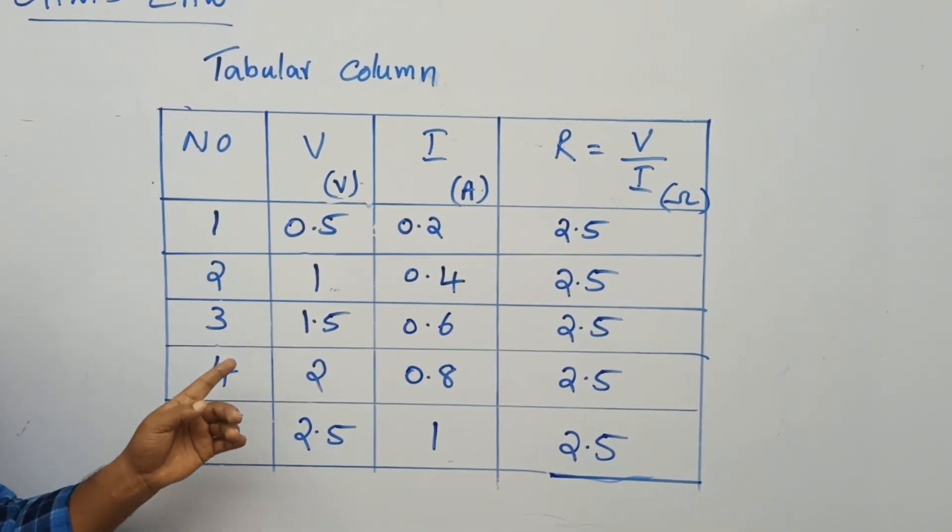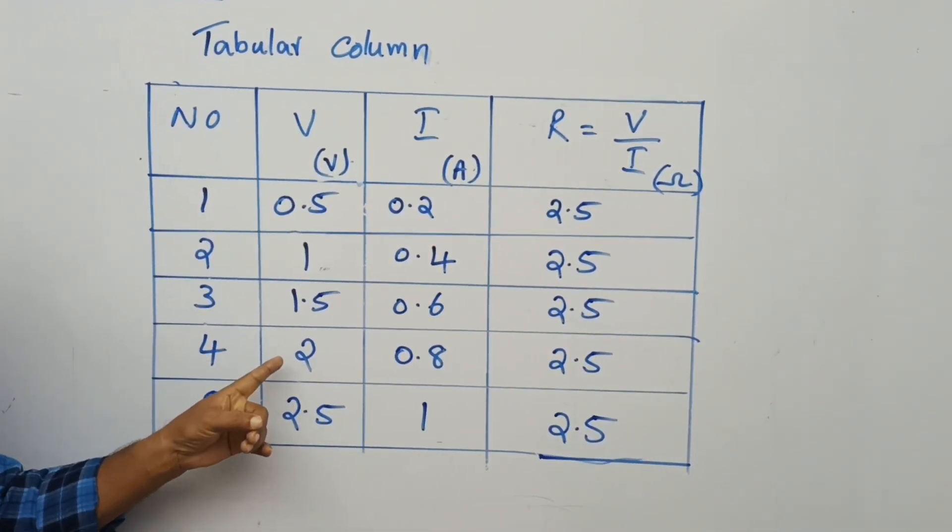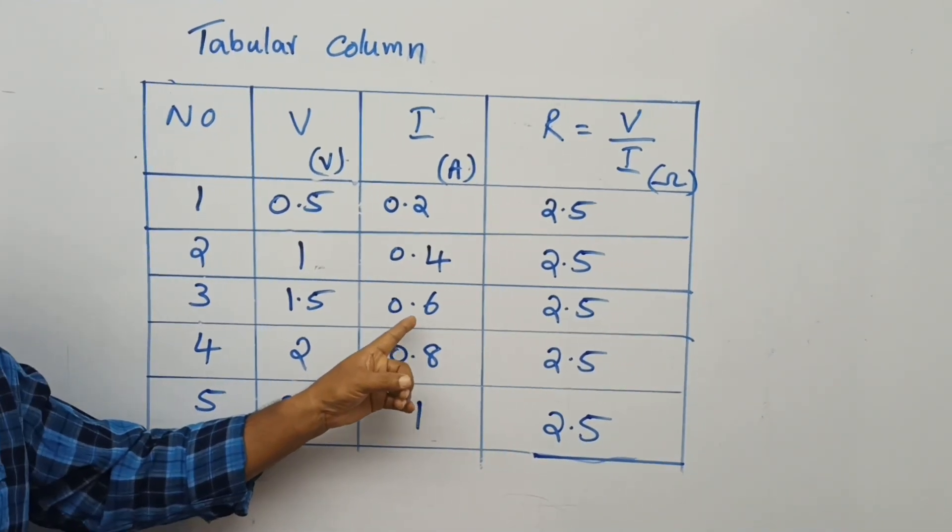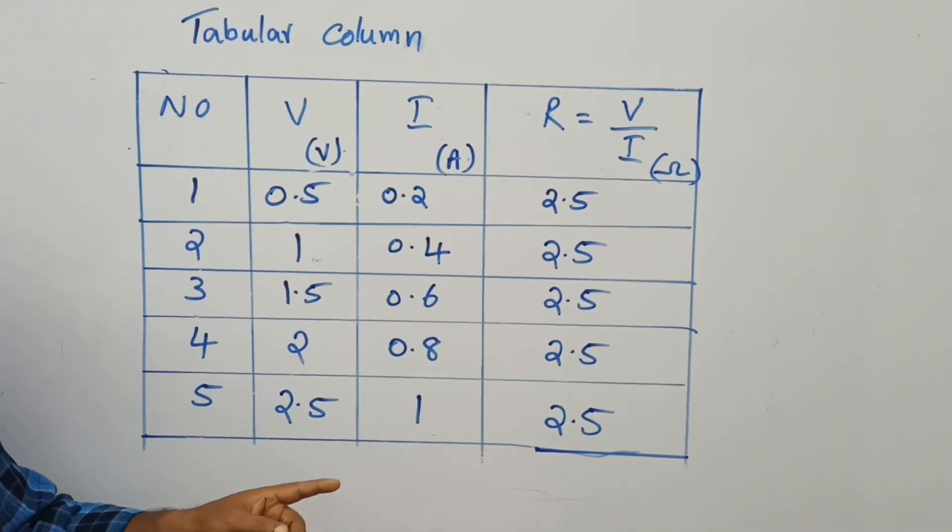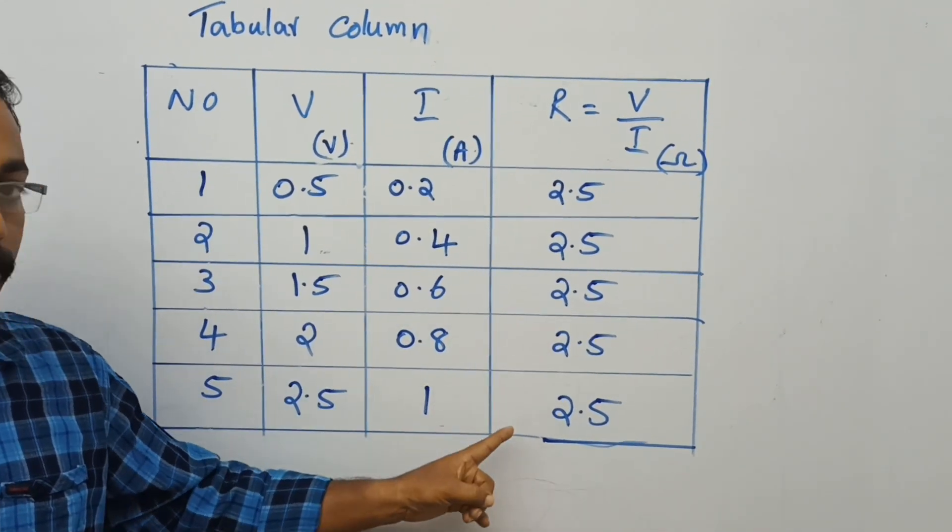By changing the rheostat, I changed the voltage to 1.5 volt, 2 volt, and 2.5 volt. I got the currents 0.6 amperes, 0.8 amperes, and 1 ampere. In all these three cases, I got the value of resistance 2.5 ohm.